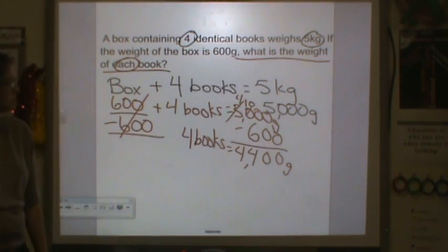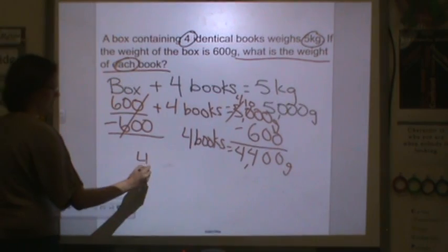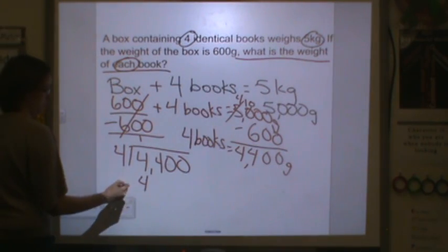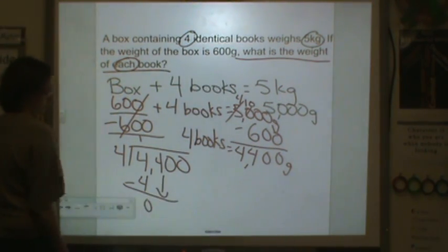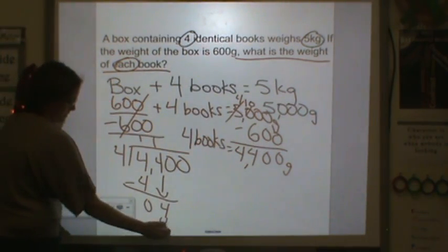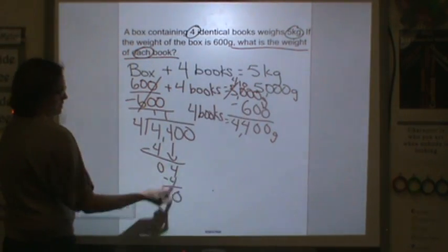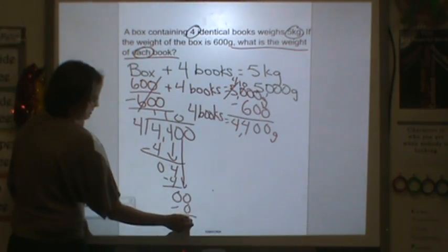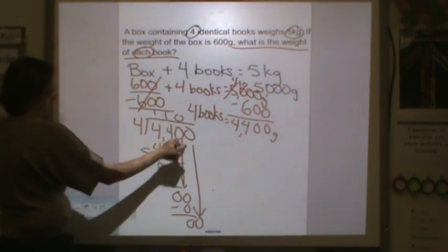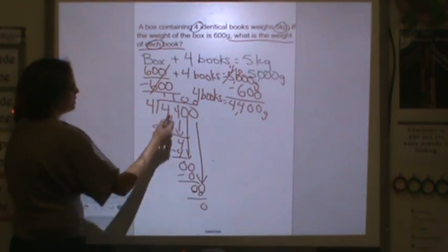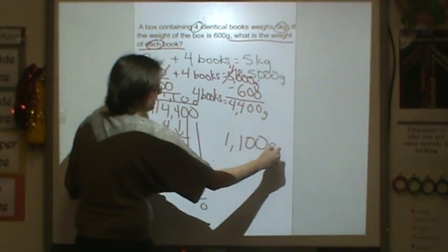But what I really need to know is how much each book weighs. So we're going to divide to find out how much one book would weigh. How many fours are in four? One. Multiply, subtract, bring down. How many fours are in four? One. Multiply, subtract. Bring down the zero. How many fours are in zero? Zero. Multiply, subtract, bring down. How many fours are in zero? Zero. Subtract, bring down. So each book weighs 1,100 grams.